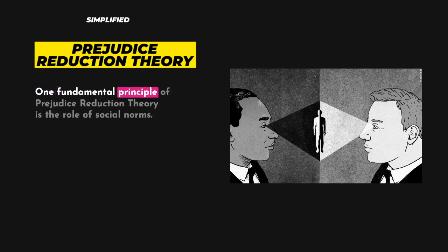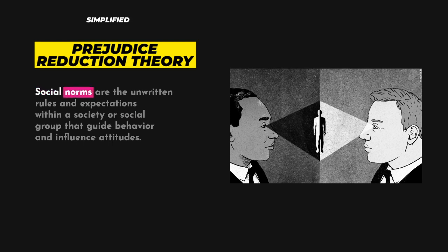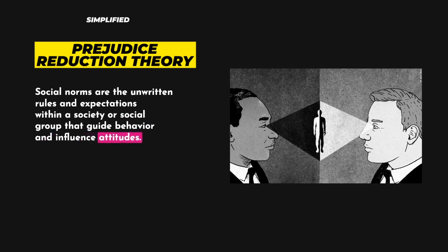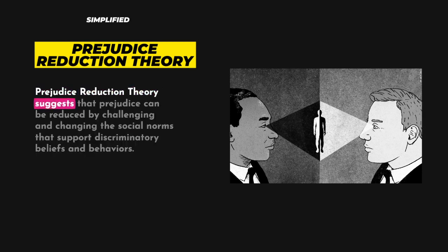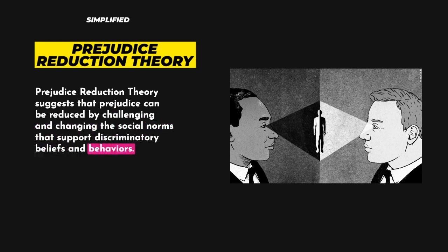One fundamental principle of Prejudice Reduction Theory is the role of social norms. Social norms are the unwritten rules and expectations within a society or social group that guide behavior and influence attitudes. Prejudice Reduction Theory suggests that prejudice can be reduced by challenging and changing the social norms that support discriminatory beliefs and behaviors.